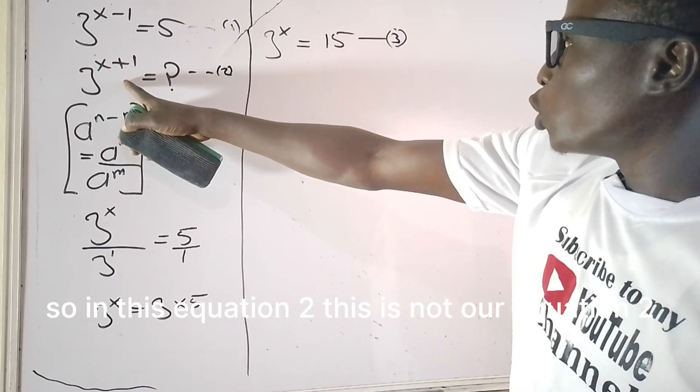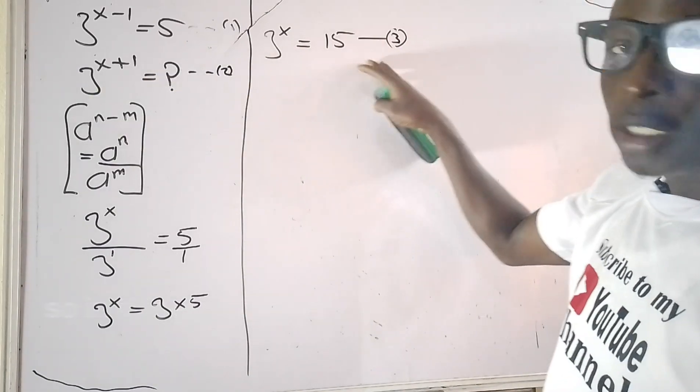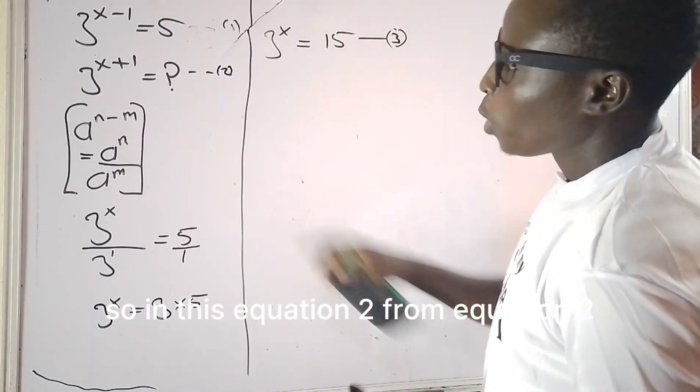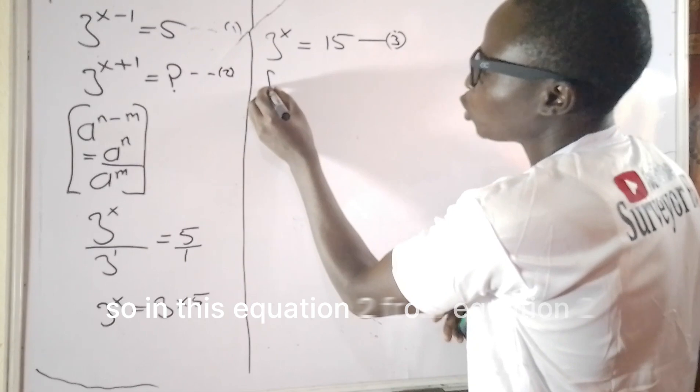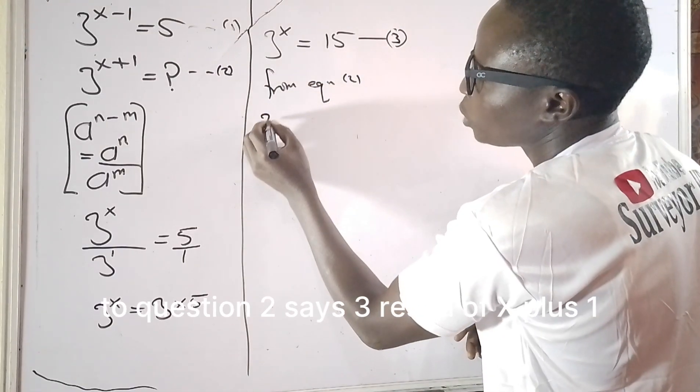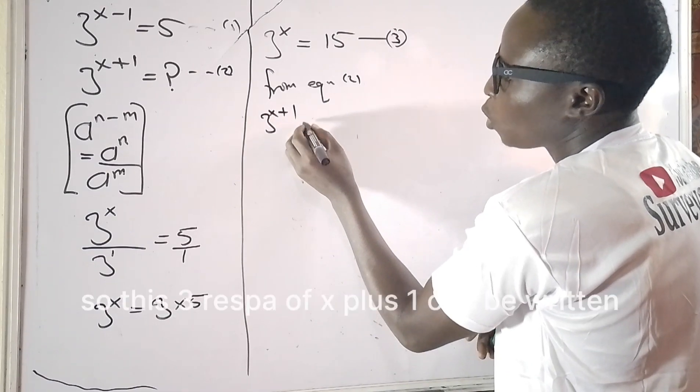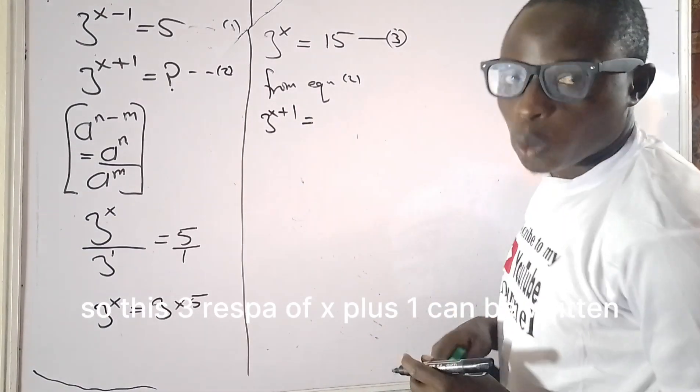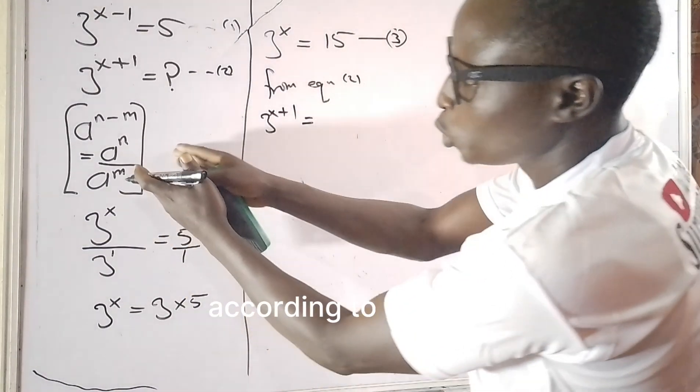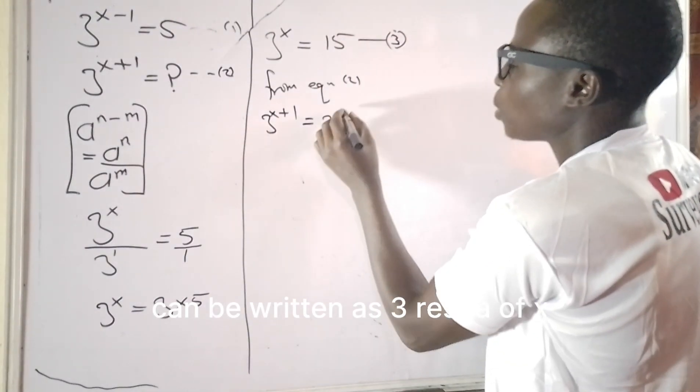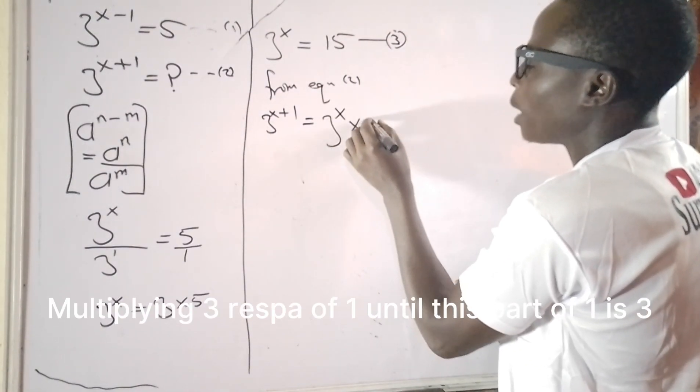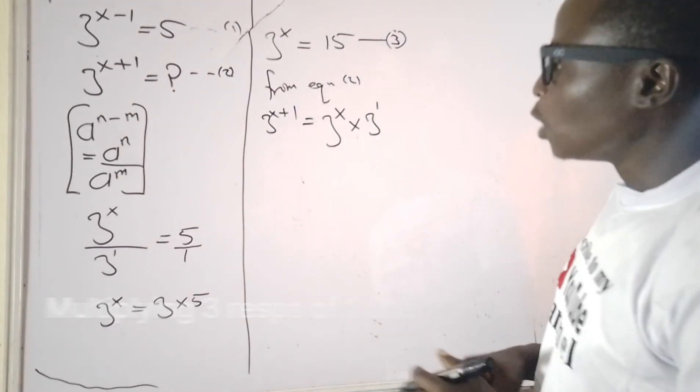So this is now our equation 2, and this is equation 3. From equation 2, we have 3 raised power of x plus 1. So this 3 raised power of x plus 1 can be written, according to this rule, as 3 raised power of x multiplying 3 raised power of 1. And 3 raised power of 1 is 3.